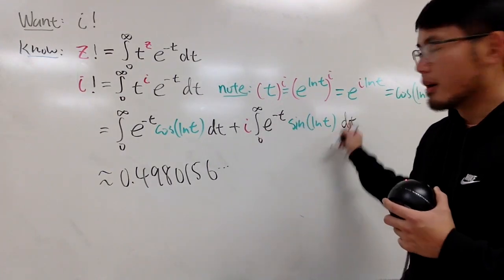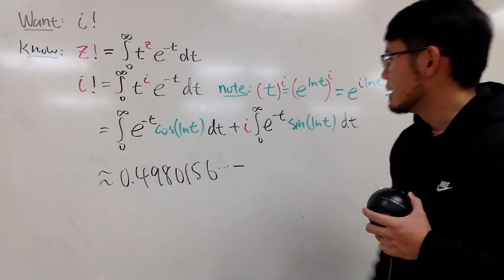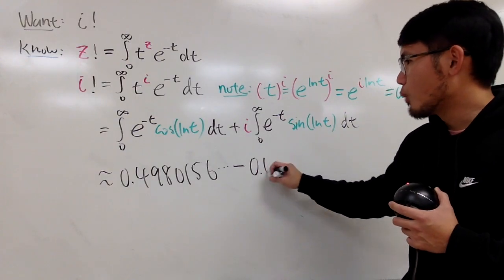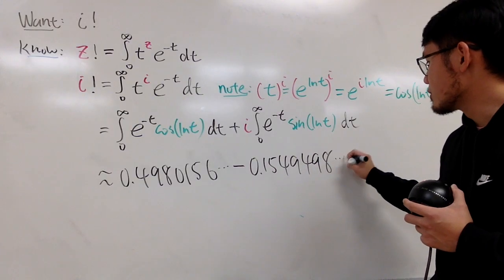And, for this right here, you actually end up with a negative value, so we have to subtract. And, the value right here is approximately 0.1549498, and so on, so on, so on.